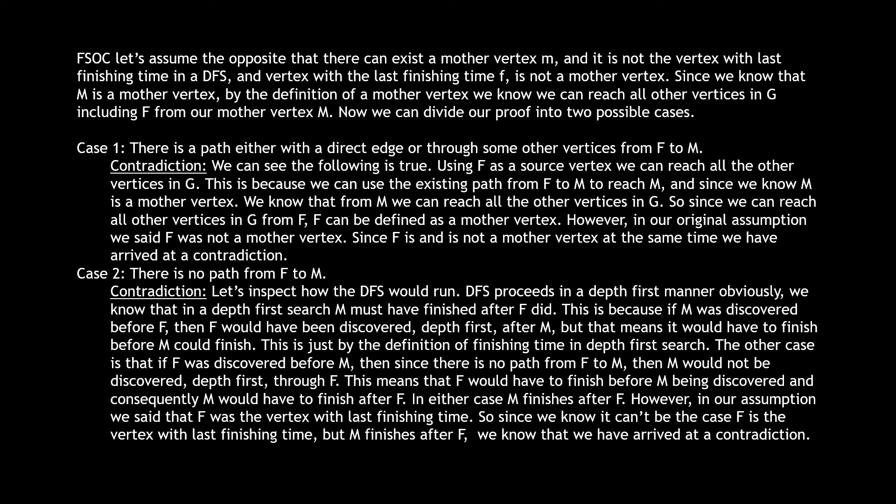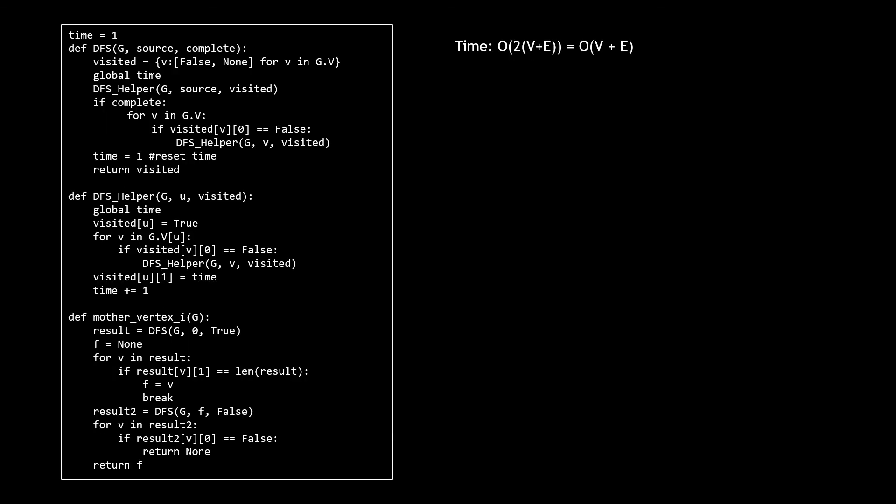Here's the written proof in full in case you want to review it. Now that the key statement is proven, let's analyze complexity of the improved solution. We run two passes of DFS, so time complexity is O(2 * (V + E)), which simplifies to O(V + E) — exactly what we were targeting. Space complexity is O(V) for the visited dictionary and recursive call stack.